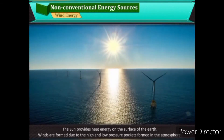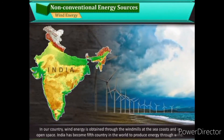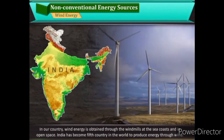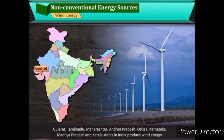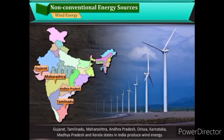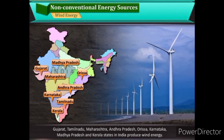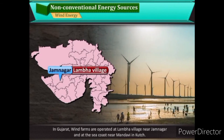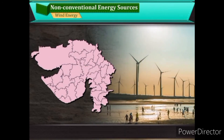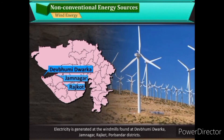The sun provides heat energy on the surface of the Earth, and winds are formed due to high and low pressure pockets in the atmosphere. In our country, wind energy is obtained through windmills at sea coasts and in open spaces. India has become the fifth country in the world to produce energy through wind. In Gujarat, wind farms are operated at Lambha village near Jamnagar and at the sea coast near Mandavi in Kutch. Electricity is generated at windmills in Devbhoomi Dwarka, Jamnagar, Rajkot, and Porbandar districts.